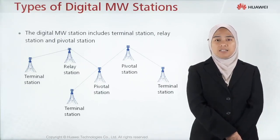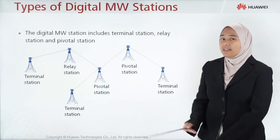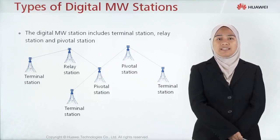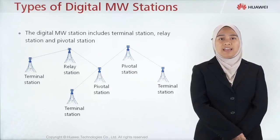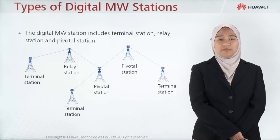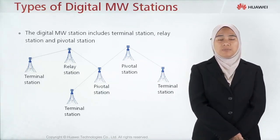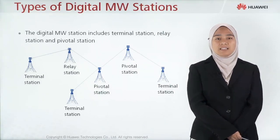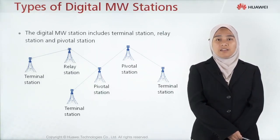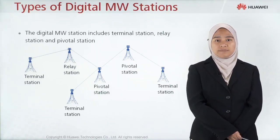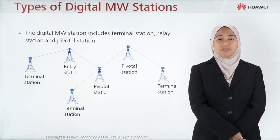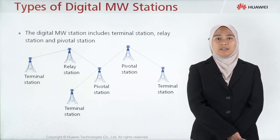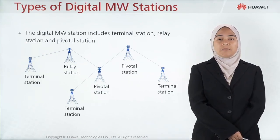As in this diagram, the terminal station is usually located at the end of the line or end of the branch, and it is also the station transmitting in only one direction. The relay station is the middle station without add or drop function.